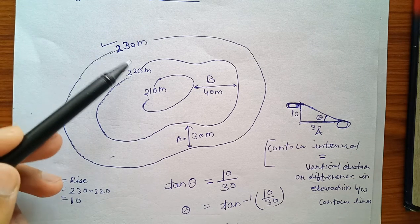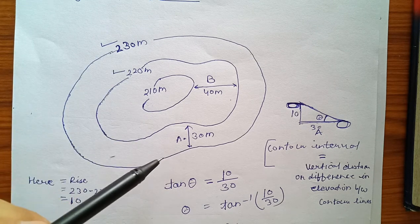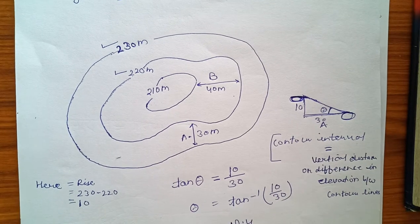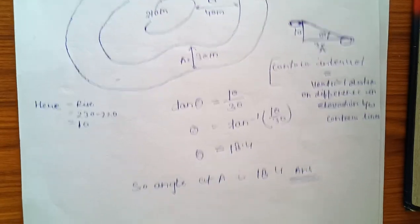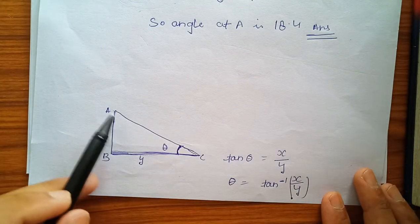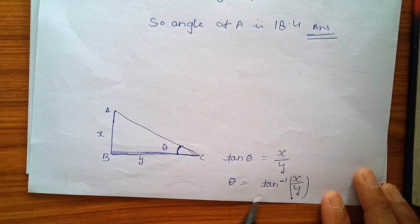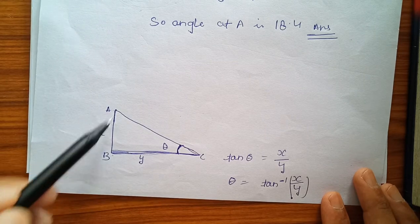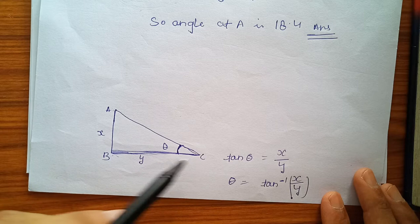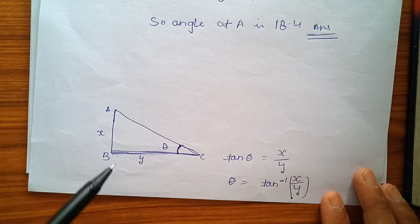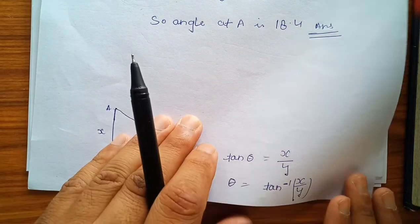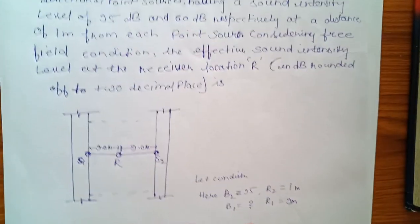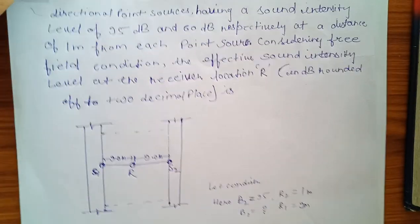Then this is the distance of two contour intervals, 30. So theta will be tan inverse of 10 over 30, and solving we get theta is equal to 10.4 degrees. So tan theta formula, we found the angle at A. This can be the formula for every contour: tan theta is equal to contour elevation difference over contour interval distance.